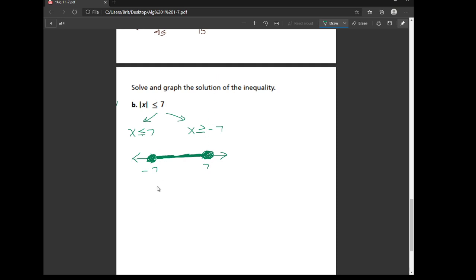We can also write this as an inequality saying negative 7 is less than or equal to x is less than or equal to 7. If I wanted to write it in interval notation I would use square brackets because it's shaded in. And I'd write it like an ordered pair.